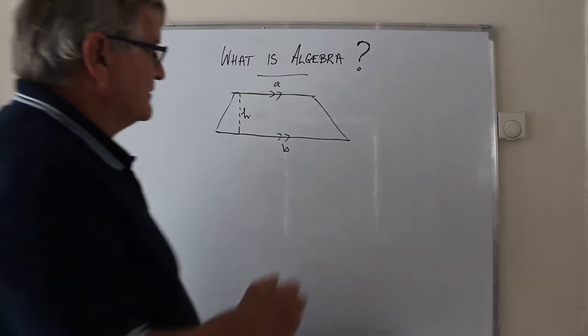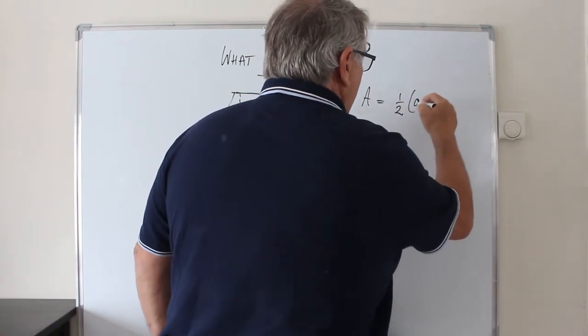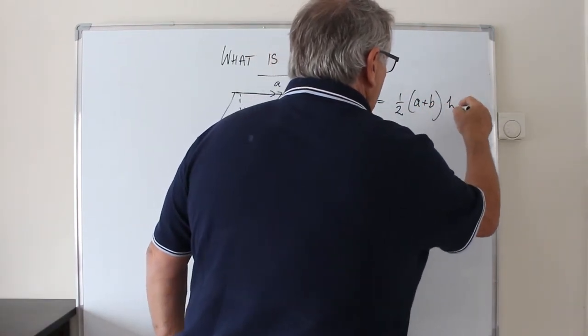Using Algebra, I can say A is equal to half of a plus b times h.